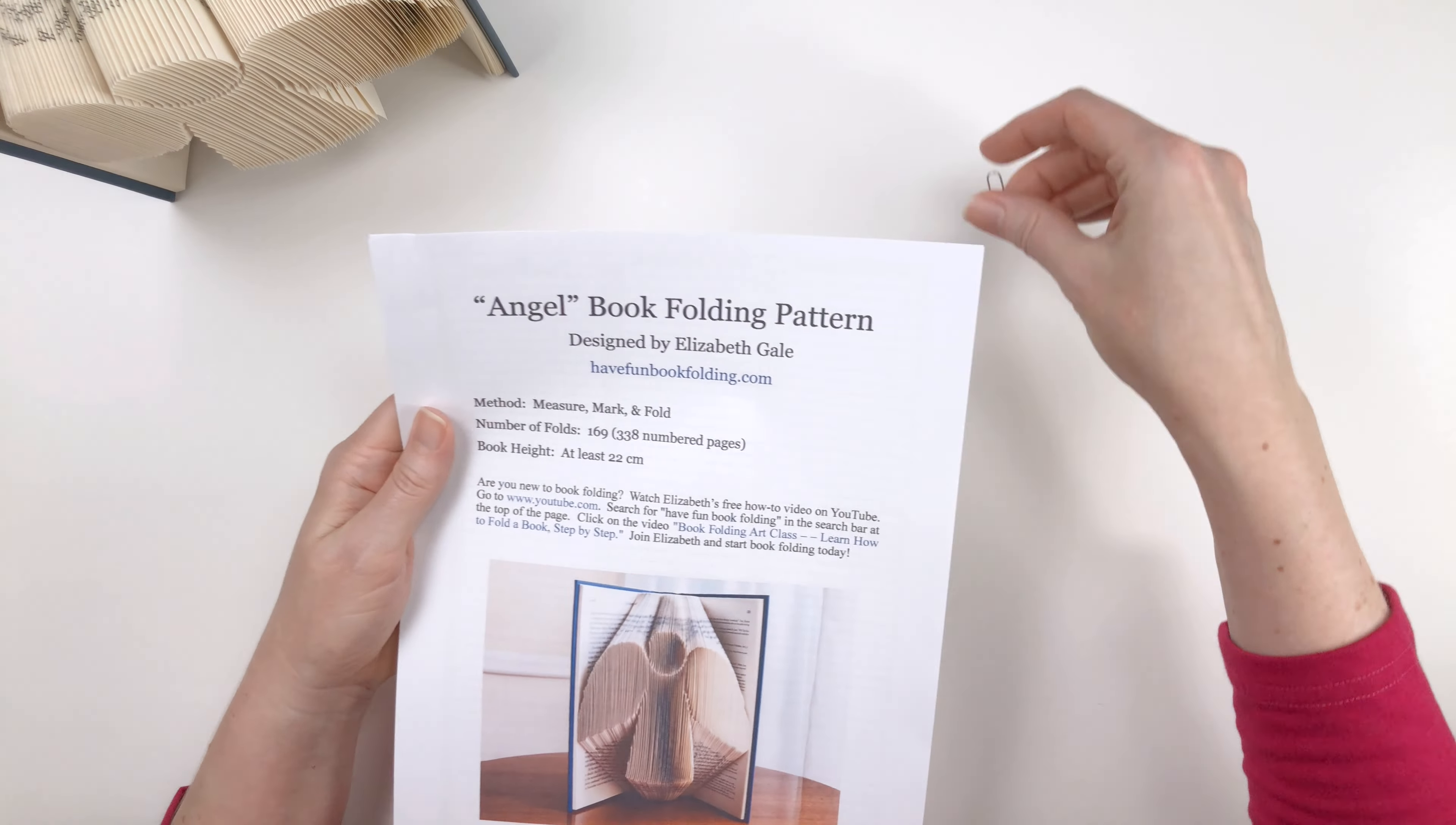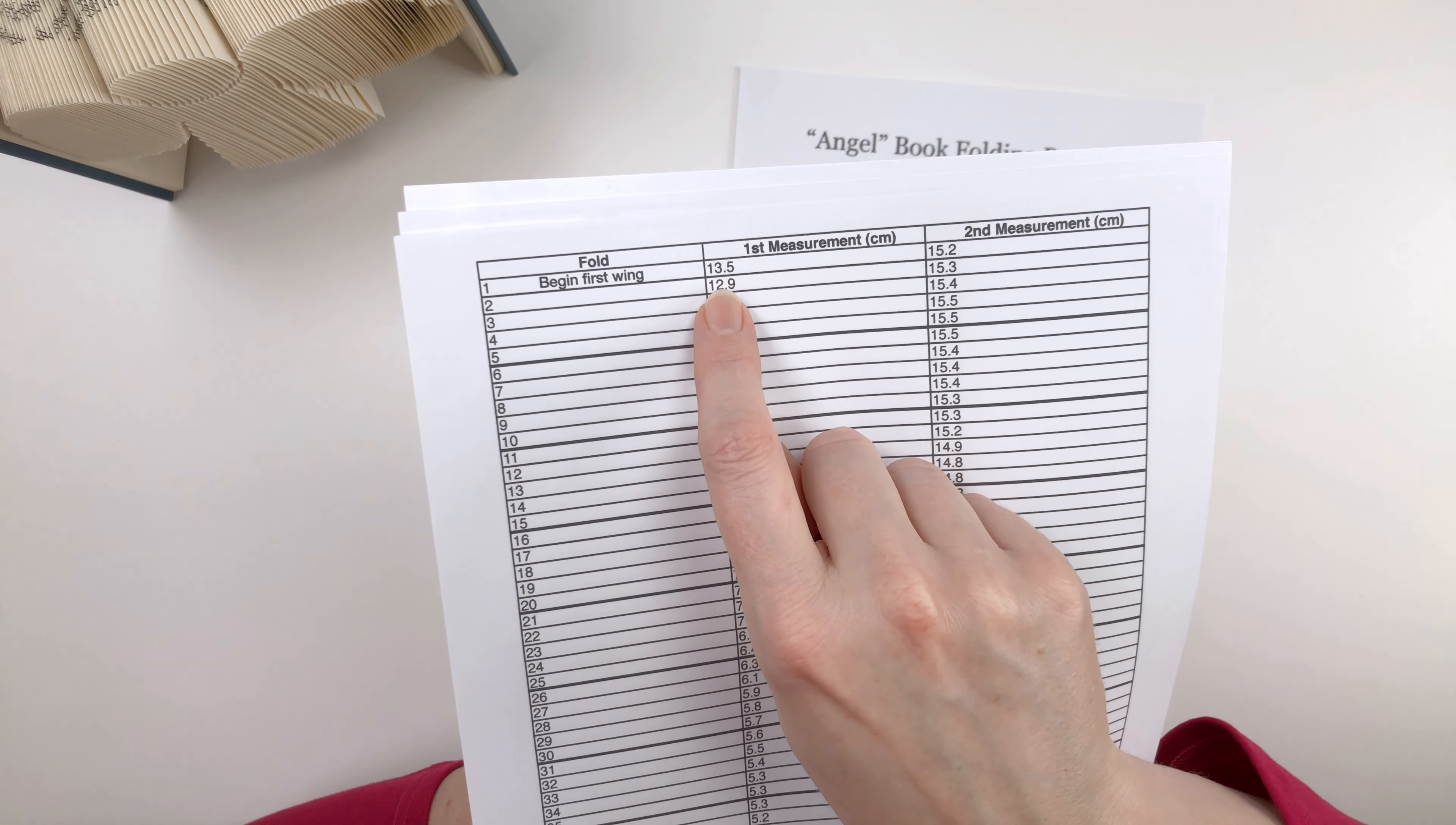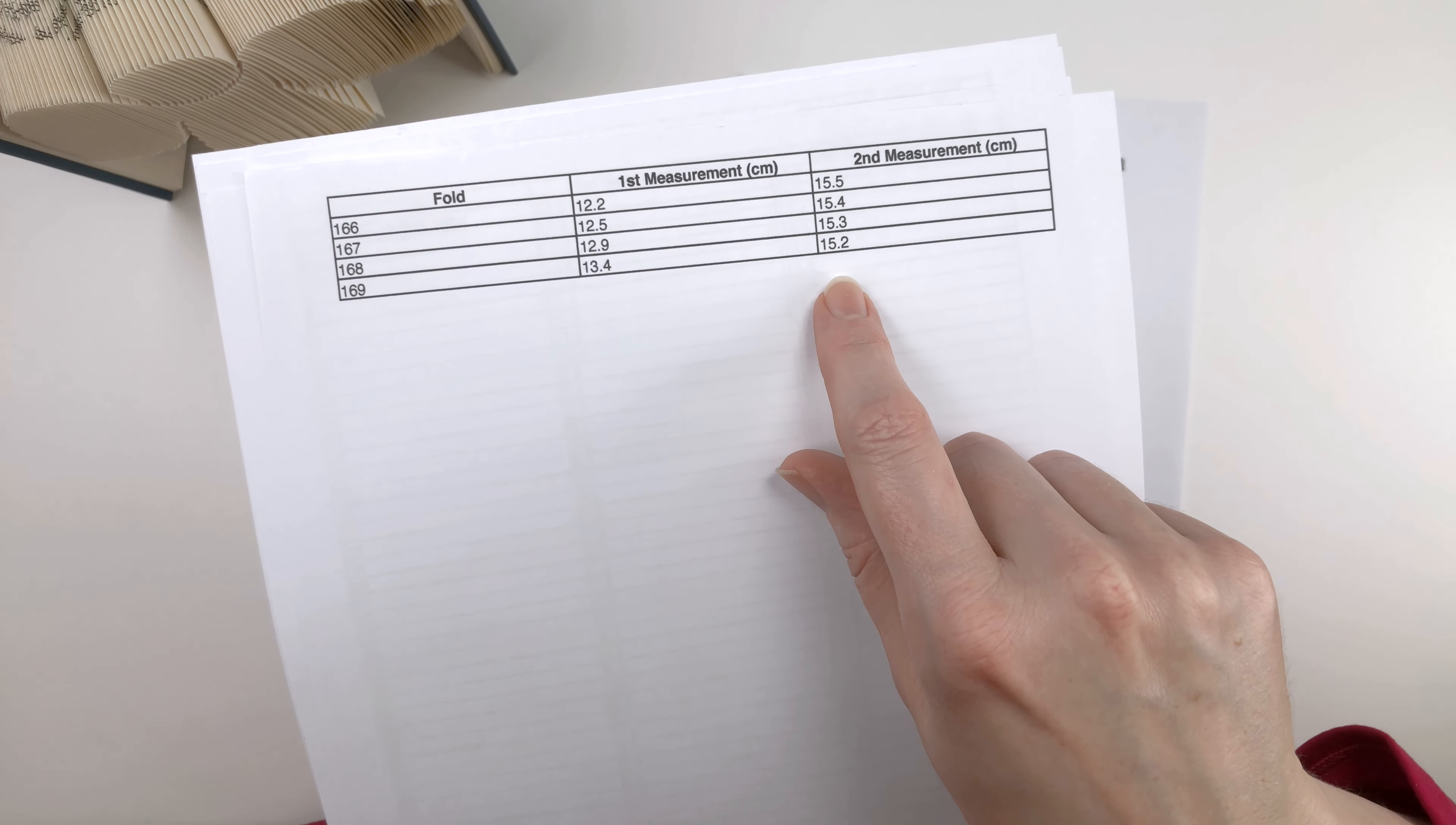Let's go to the next page of the pattern. And you can see it's the typical table of measurements that you'll be working through, where each line in the pattern equals one page in your book. If we look at fold number one, you can see it's got first measurement of 13.5 centimeters and a second measurement of 15.2 centimeters. Then the pattern continues all the way up through fold 169, which has measurements of 13.4 and 15.2 centimeters.